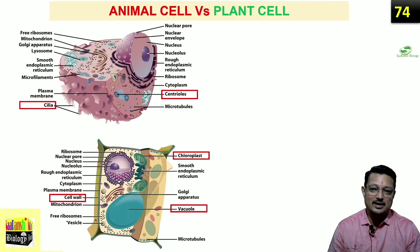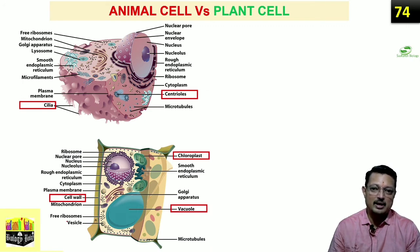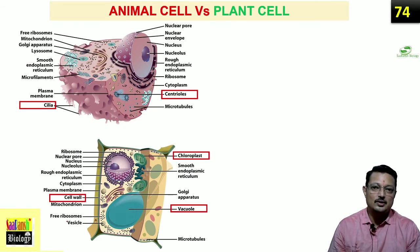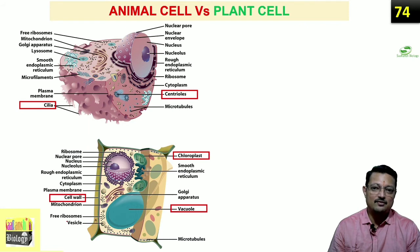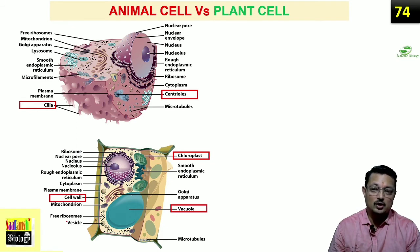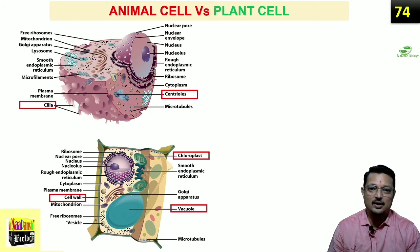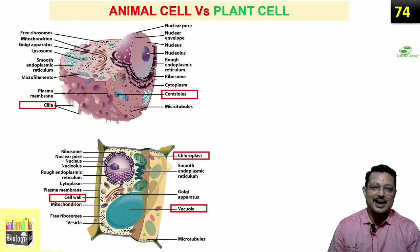The presence of cilia is seen in animal cells but not in plant cells. There is also a clear region in plant cells called the cell plate that functions in cell division — you will read about this in detail when you study cell division. So these were the major differences between plant and animal cells.